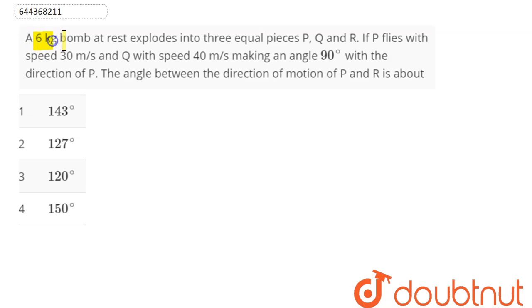Question is: A 6 kg bomb at rest explodes into 3 equal pieces P, Q, and R. If P flies with speed 30 m/s and Q with speed 40 m/s, making an angle 90 degrees with the direction of P, the angle between the direction of motion of P and R is about?